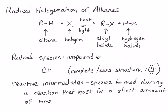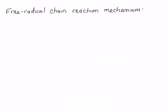Halogenation is a free radical chain reaction. It's called a free radical chain reaction because it involves the formation of reactive intermediates that are radicals, and it's called a chain reaction because once the reaction starts, it propagates itself.